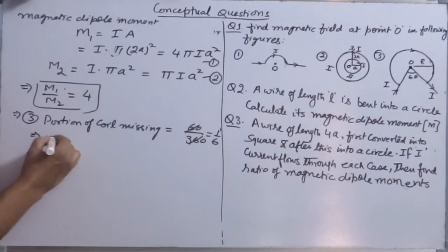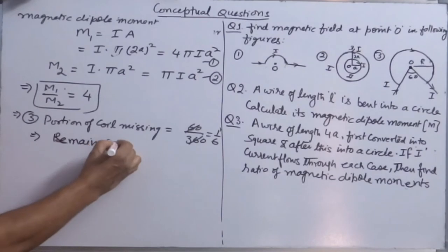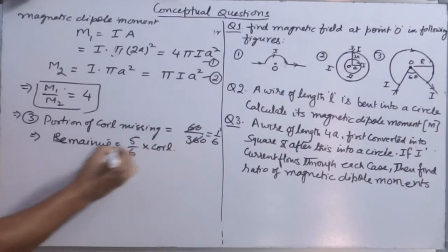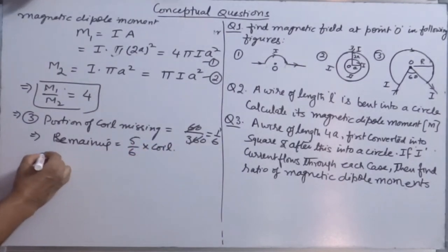If total portion remaining is, what is remaining? 5/6 of the complete coil. And you know the magnetic field due to a coil, so the net magnetic field at O.